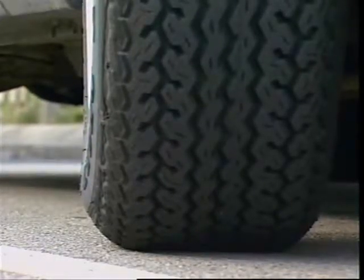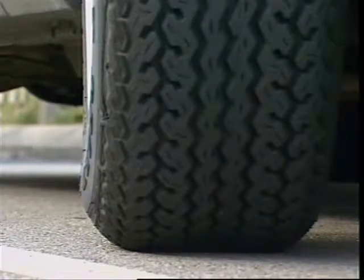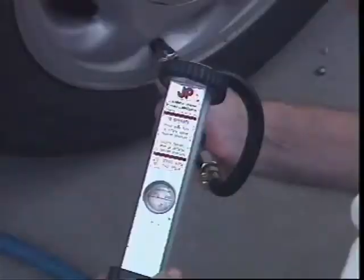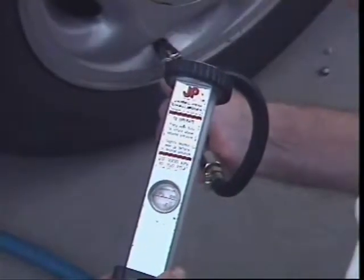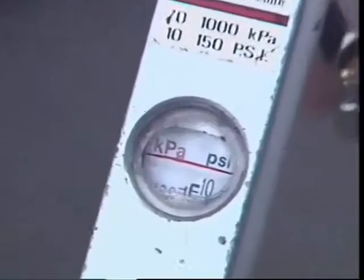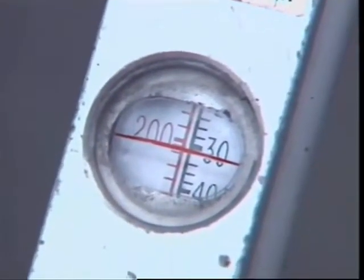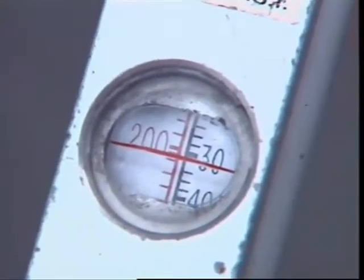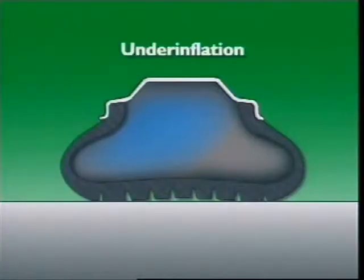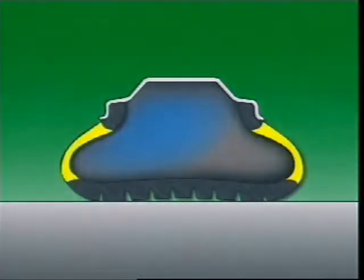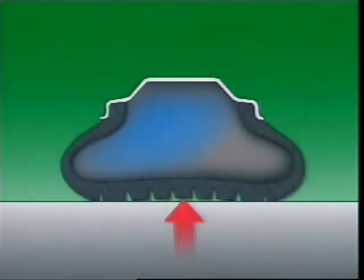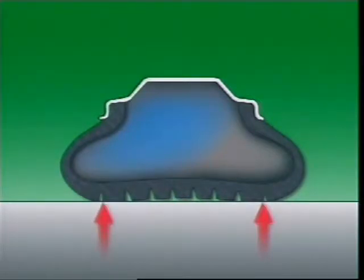The sidewalls of radial ply tyres bulge where the tyre meets the road, making it difficult to estimate inflation pressure visually — it needs to be checked with an accurate tyre gauge. Using correct inflation pressures extends tyre life and is vital for safety. Sidewalls of an under-inflated tyre flex too far, which pushes the centre section of the tread up and away from the road, causing wear at the shoulders.